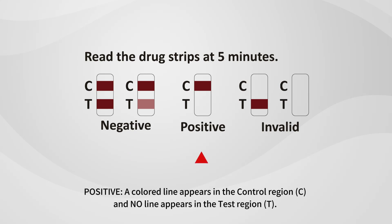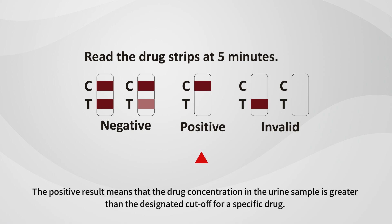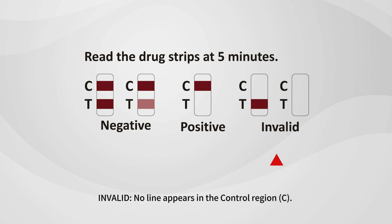For a positive result, a colored line appears in the control region (C) and NO line appears in the test region (T). The positive result means that the drug concentration in the urine sample is greater than the designated cutoff for a specific drug.